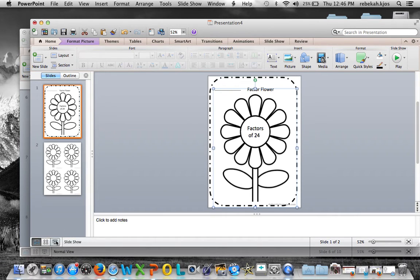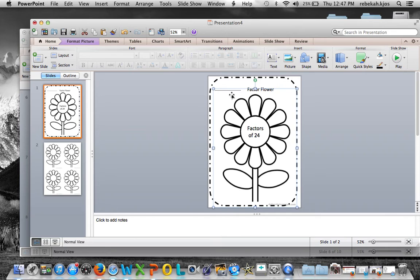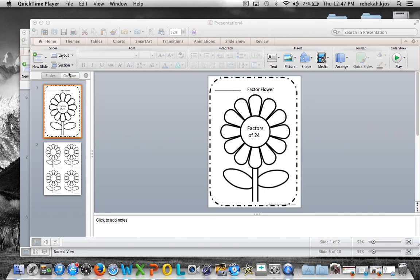Going into slideshow view, we now have a complete worksheet where students can put in their factors of 24, or whatever number you choose. This method is especially nice for math worksheets and writing worksheets. That's a basic tutorial on how to make math worksheets in PowerPoint — thanks for watching.